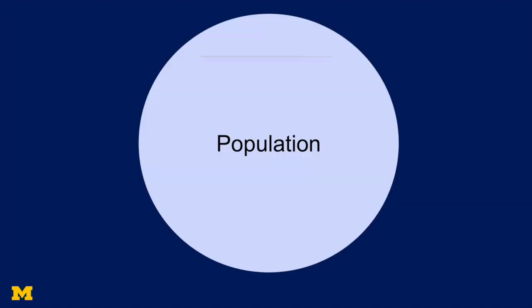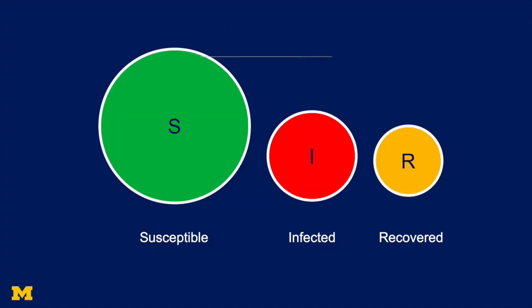So here's how the model works. We assume there's some population of people, and we divide that population into three categories. The first category is those people that are susceptible to get the disease. The second is those that are infected, those that have the disease. And the third group is those that are recovered. Among those that we categorize as recovered, we will include the fatalities.